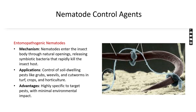Entomopathogenic nematodes are microscopic worms that target insects. These nematodes enter the insect's body through natural openings like the mouth or spiracles and release symbiotic bacteria that kill the insect host rapidly.